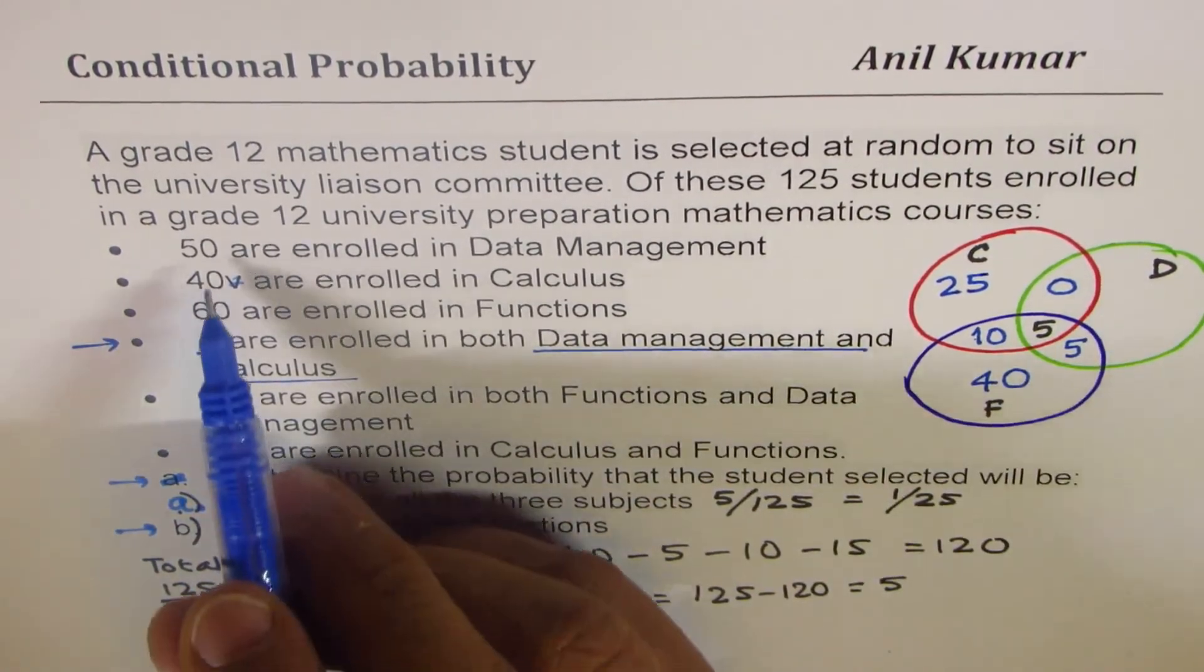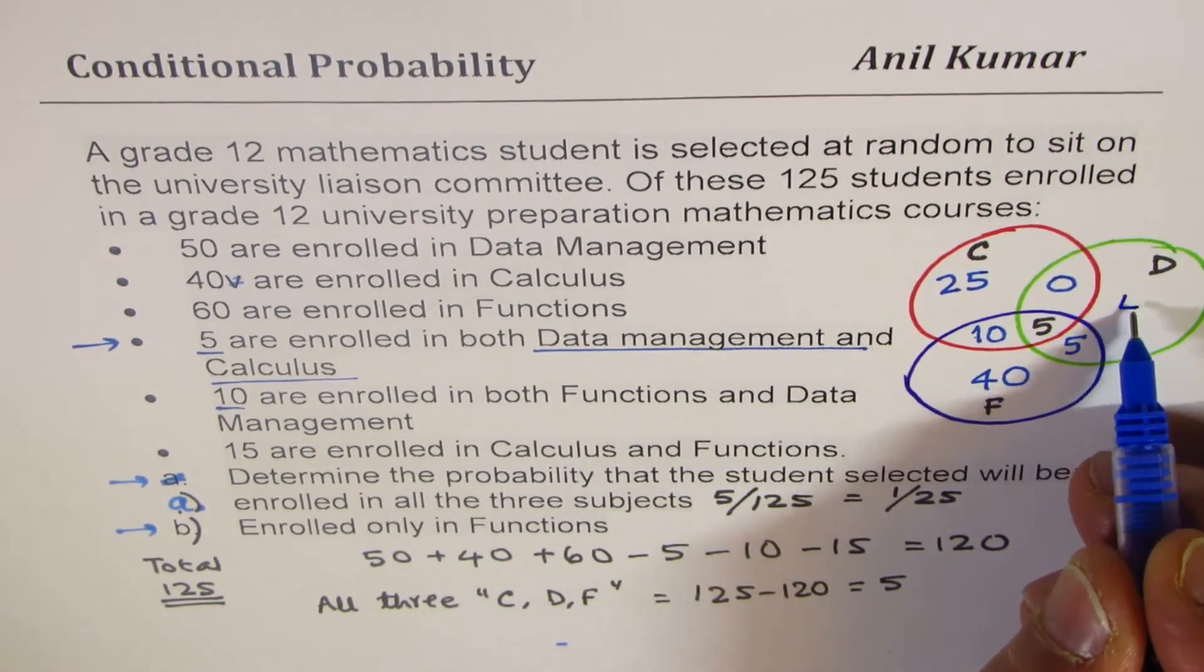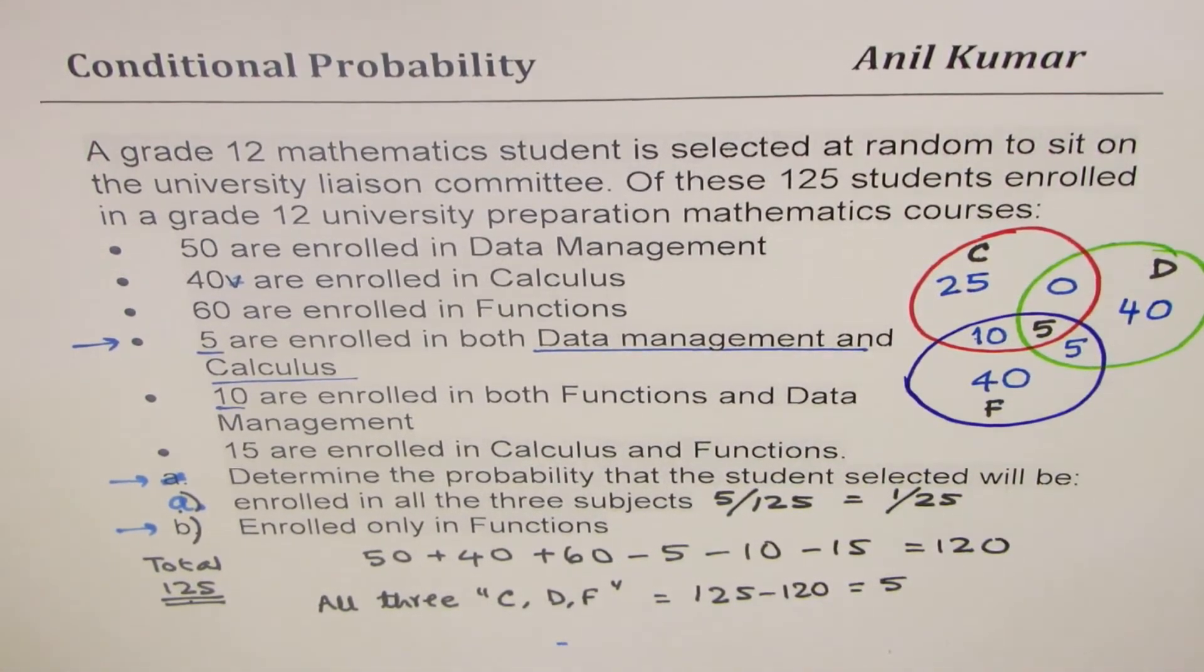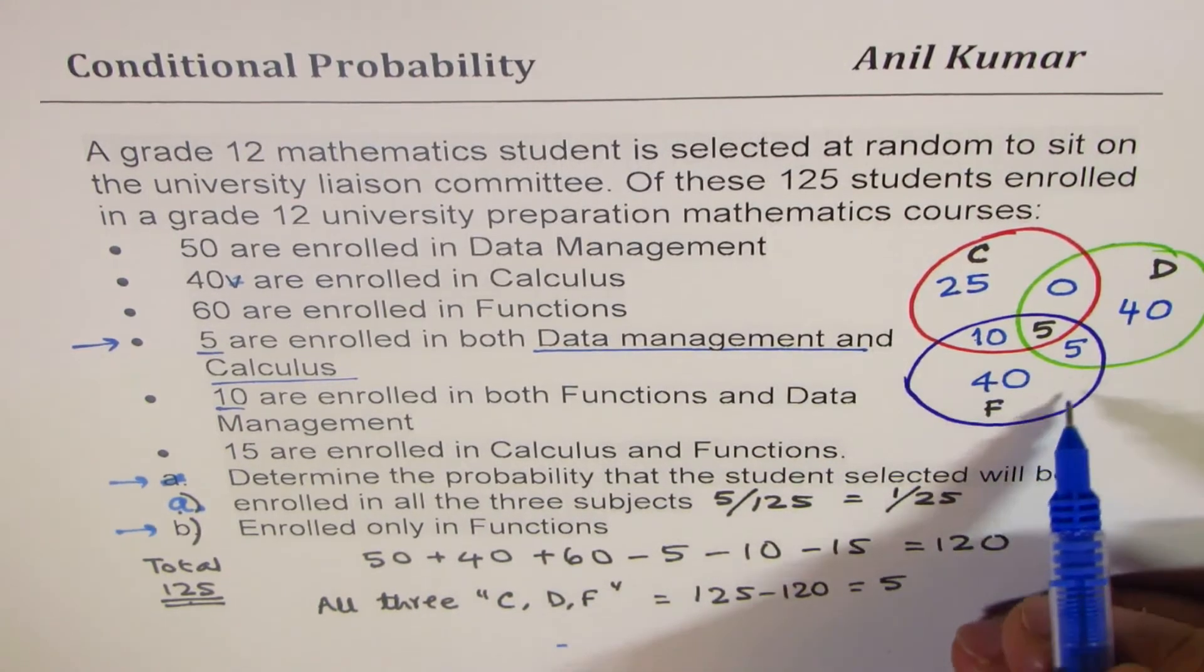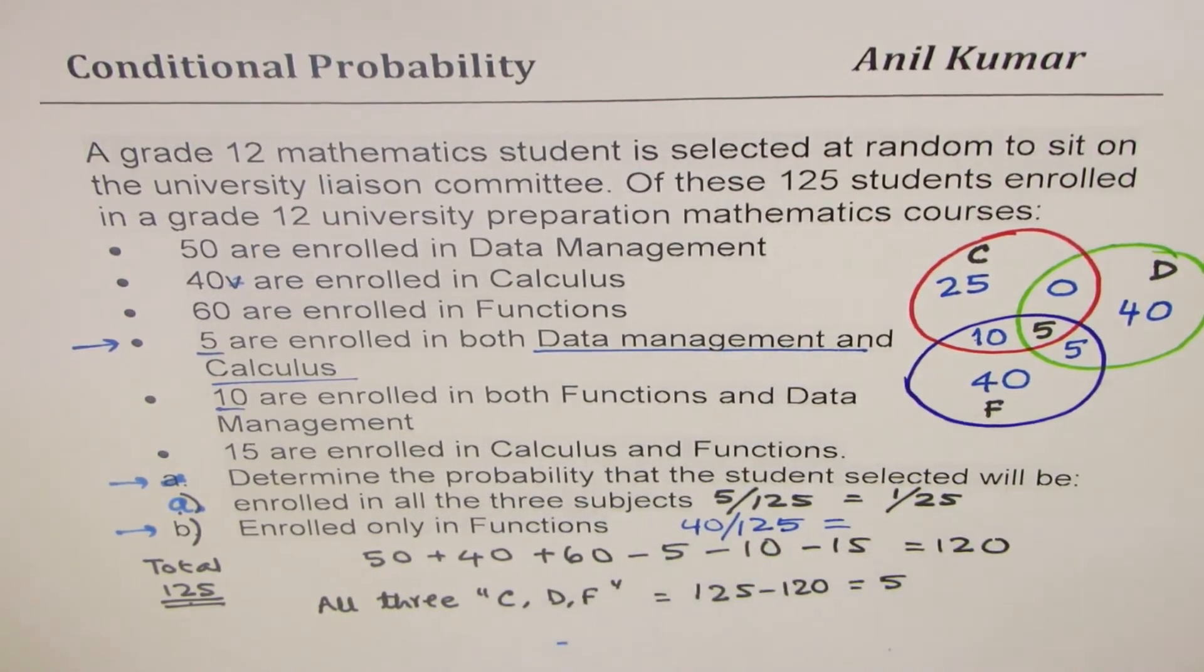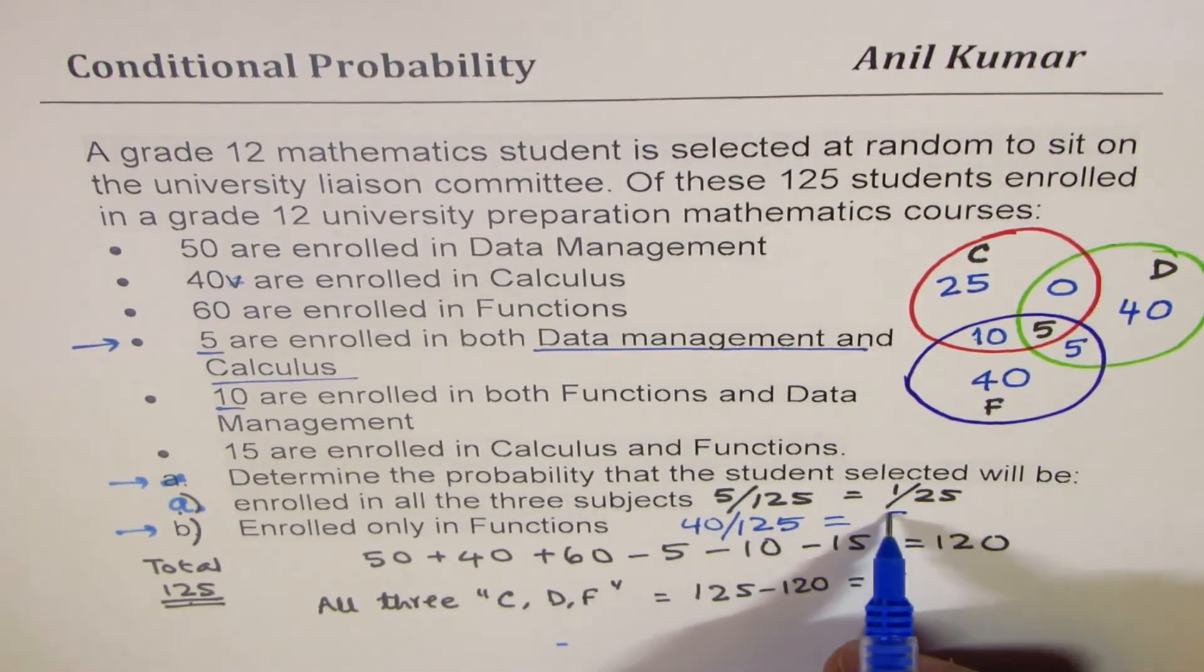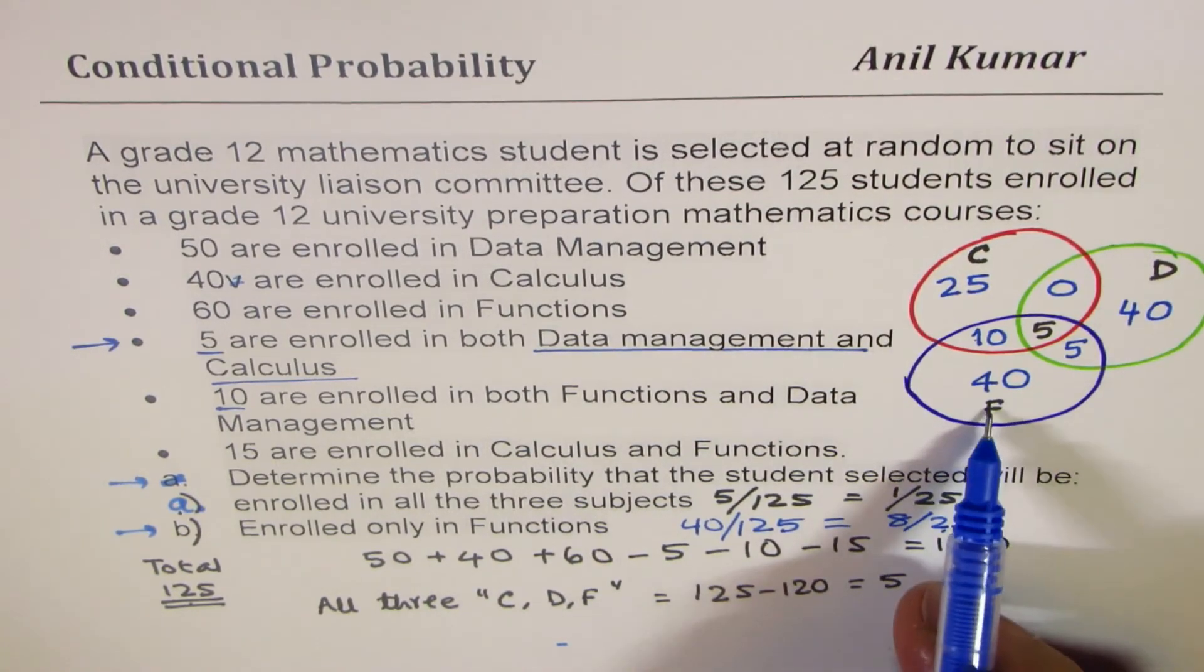For data management, there are 50 students. Ten already shown here, 40 more. When you add all this, you will get 125. Now, let's answer the second question, which is enrolled only in functions. Only in functions is 40 students. So, it is 40 over 125. When you divide both by 5, you get 8 over 25 as the students enrolled only in functions from which you are picking one.